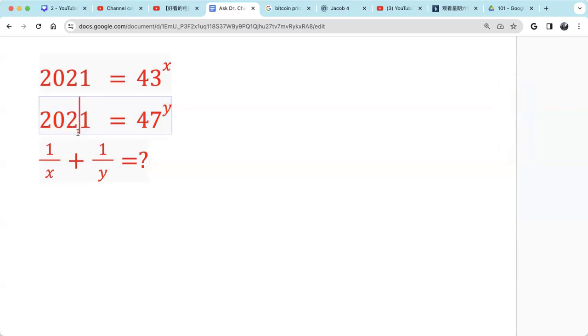So we will get 2021 raised to 1 over x plus 1 over y equals 2021, which means 1 over x plus 1 over y equals 1.